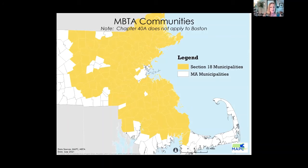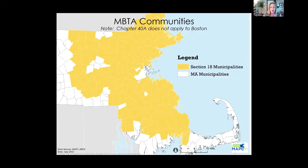For those who don't know if they're an MBTA community, this map shows all of the MBTA communities. It does not apply to Boston, which has its own zoning statute. All communities shown in yellow are MBTA communities. We will be issuing guidance for this section later this summer, conducting outreach through a stakeholder process, posting draft guidance and looking for comments, and working with all these communities to make sure they understand the requirements and have a reasonable timeline to comply.